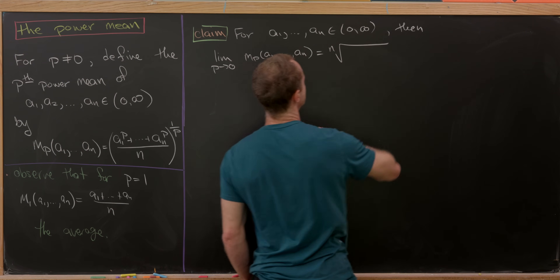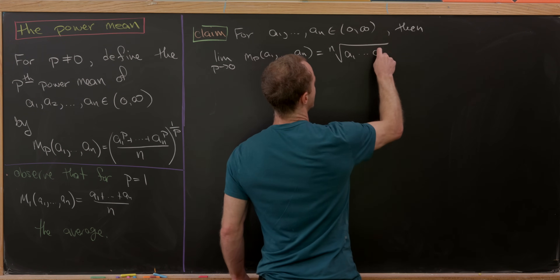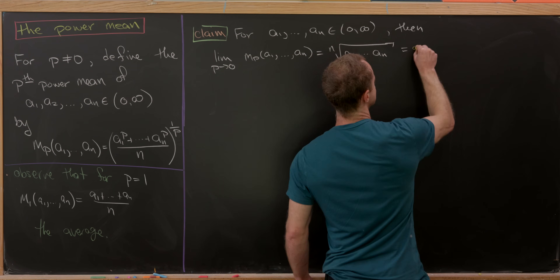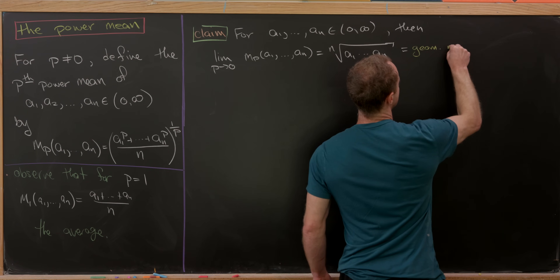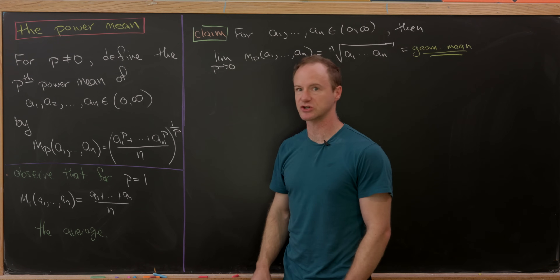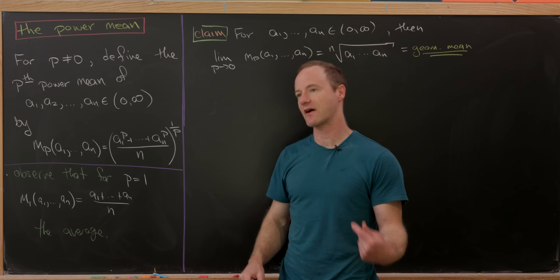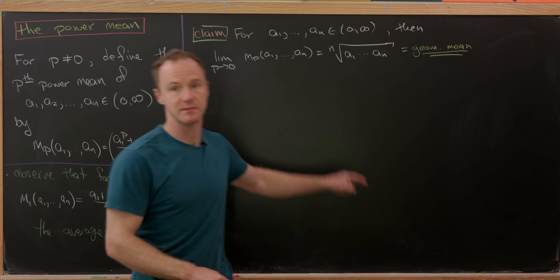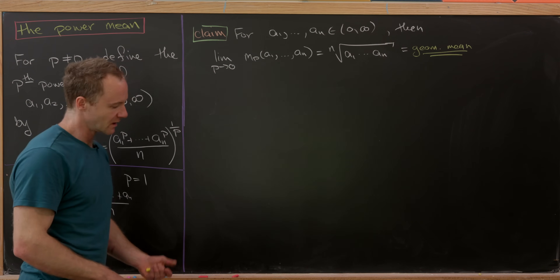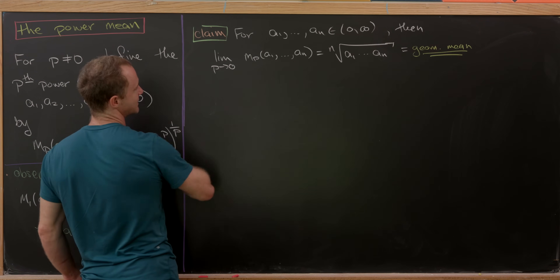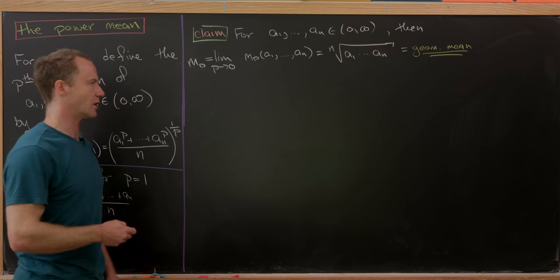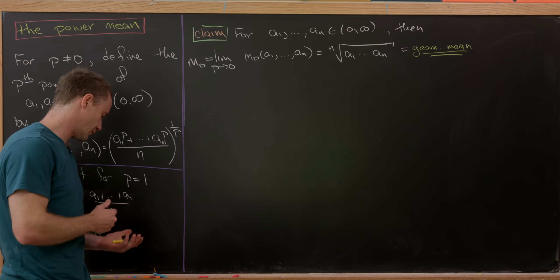The geometric mean is the n-th root of the product of a₁ through aₙ. We'll denote this limit as m₀, with the arguments a₁ through aₙ understood. So we were able to easily retrieve the arithmetic mean for p=1, and now this limit allows us to retrieve the geometric mean.